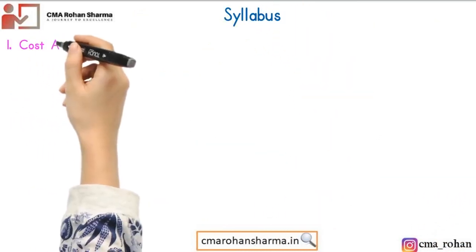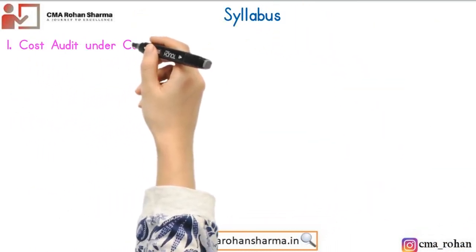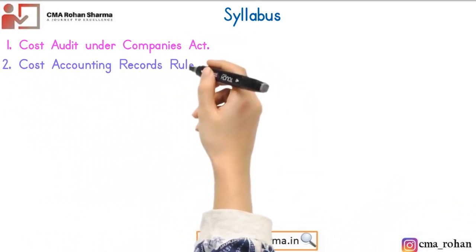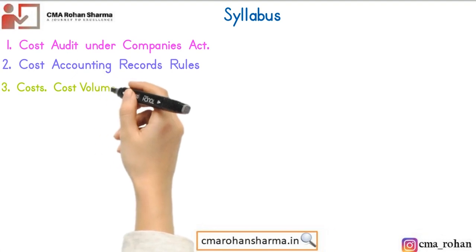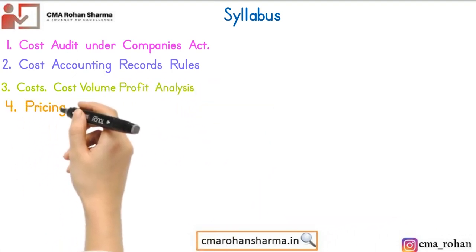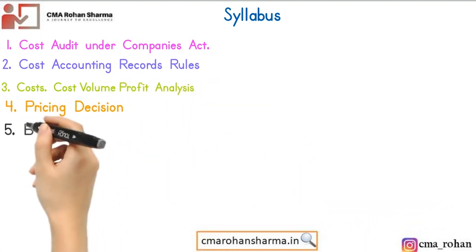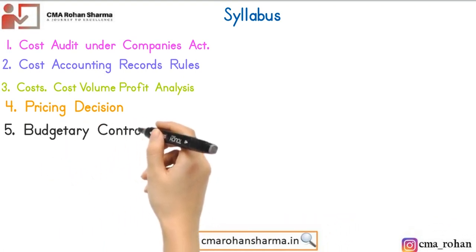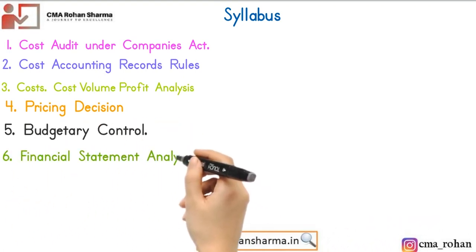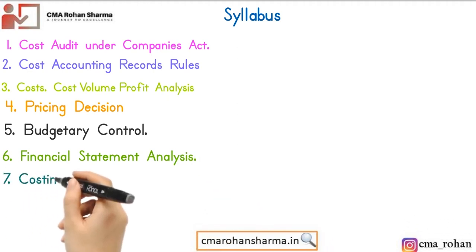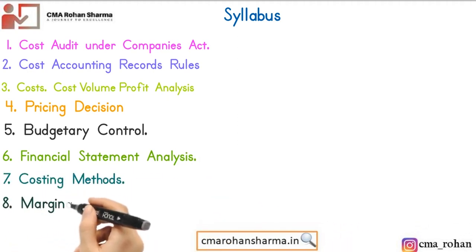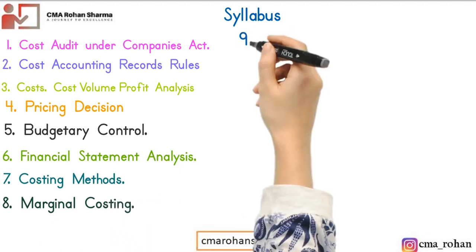Syllabus: 1. Cost audit under Companies Act. 2. Cost accounting records rules under Companies Act. 3. Costs and cost volume profit analysis. 4. Pricing decision. 5. Budgetary control. 6. Financial statement analysis. 7. Costing methods. 8. Marginal costing.